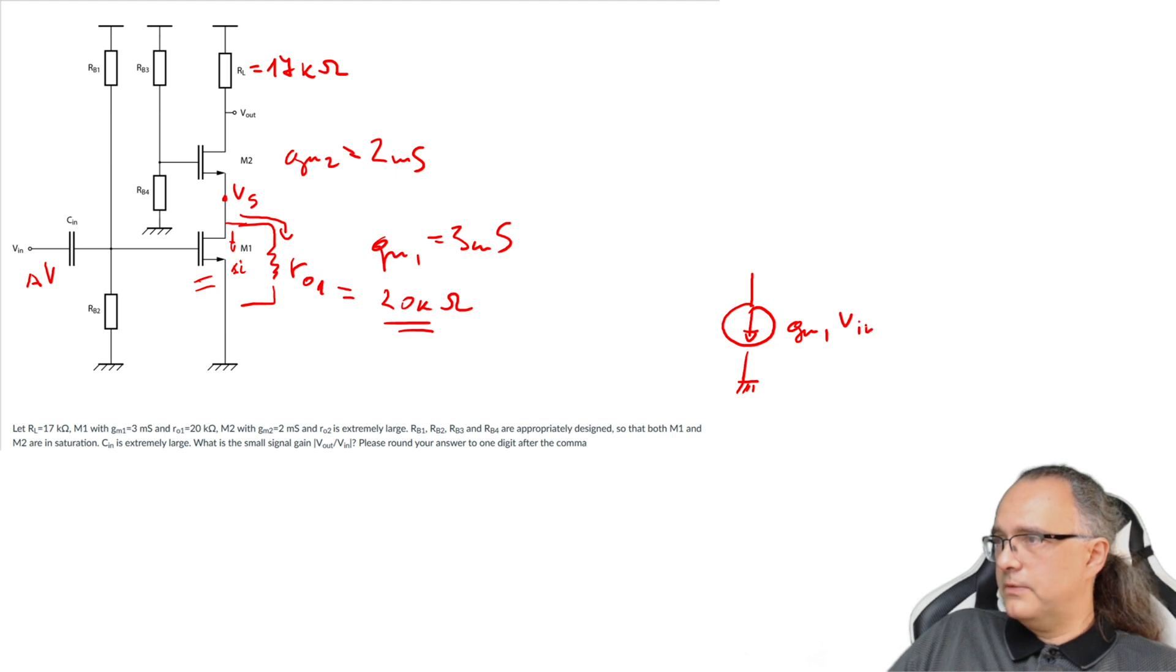Now in small signal this will be short, this will be ground and also this will be ground. We can ignore these resistors because they are for biasing and they do not influence then this node since CIN is large decoupling capacitor. It connects directly the VIN node to the gate.